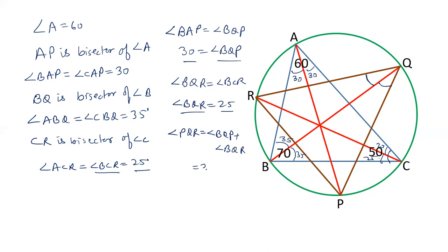Therefore angle PQR equals BQP plus BQR, that is 30 degrees plus 25 degrees, which equals 55 degrees.